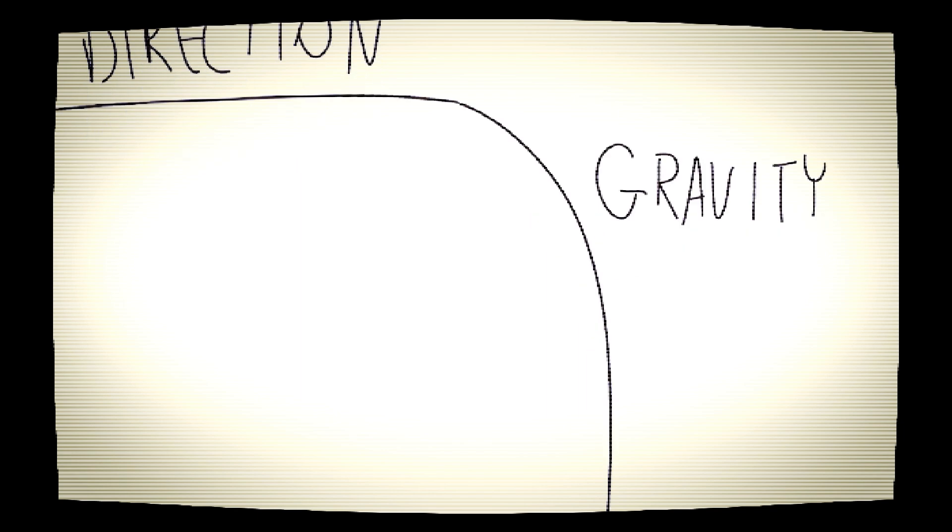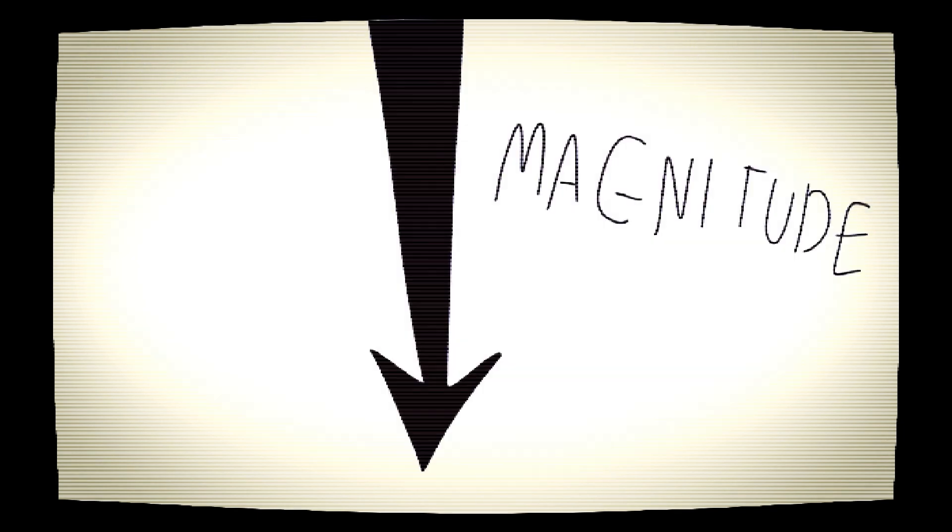Here's how it works. Each vector has a direction, like how gravity pulls down on things, and a magnitude, which represents how intense the vector is. Think of it like gravity on two different planets. It acts differently everywhere.